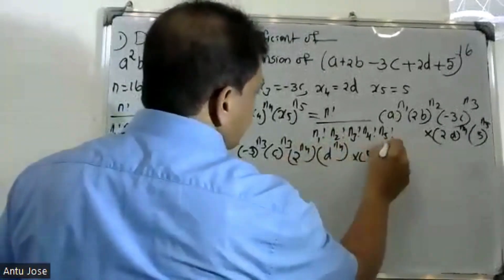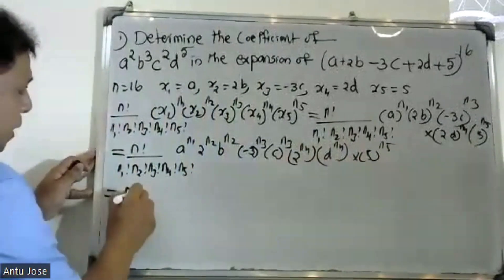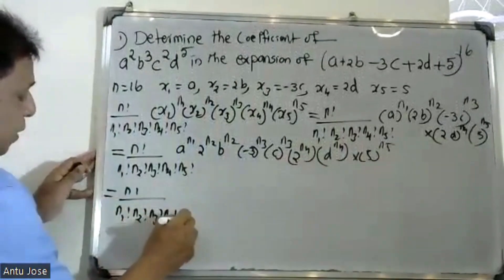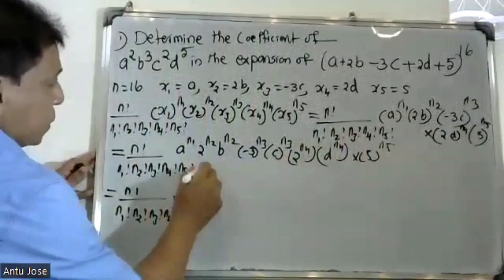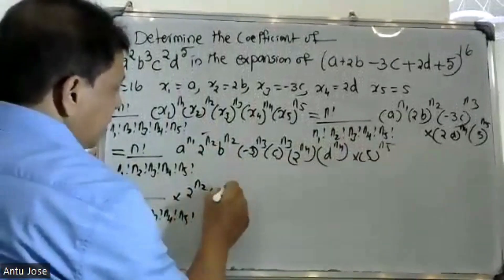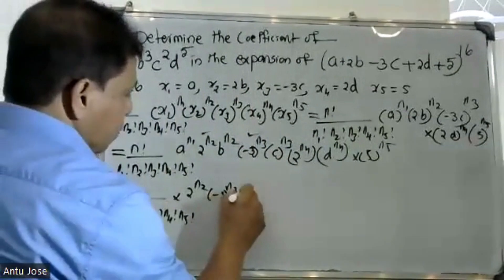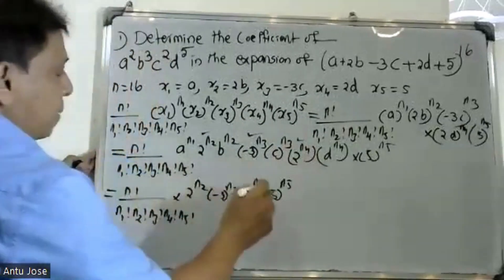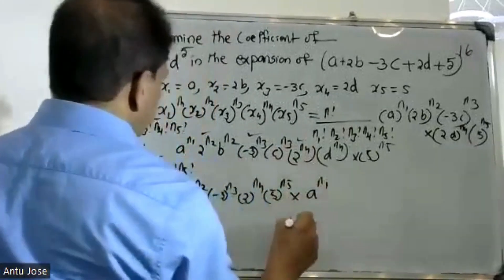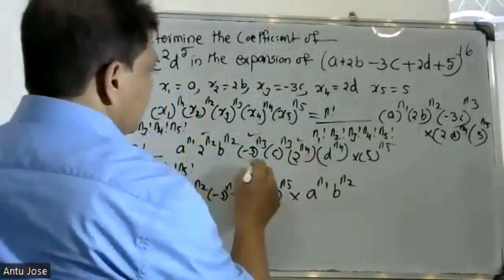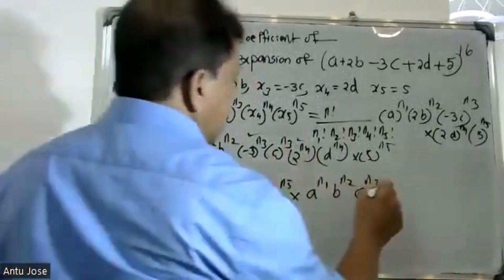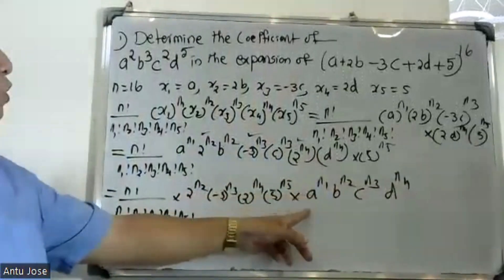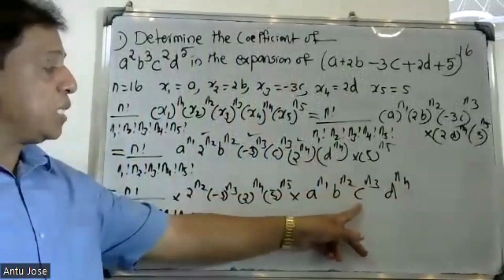Identifying the values: n1, n2, n3, n4, n5 from the required term. We need a raised to n1, b raised to n2, c raised to n3, d raised to n4. Comparing with a cubed, b cubed, c squared, d raised to 5: a raised to n1, b raised to n2, c raised to n3, d raised to n4.